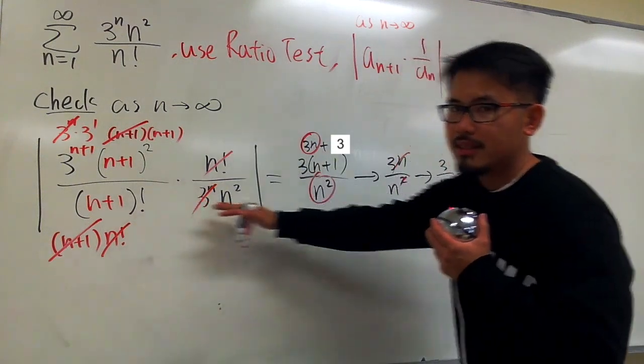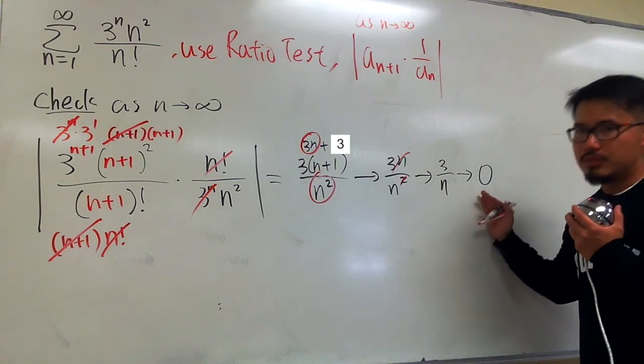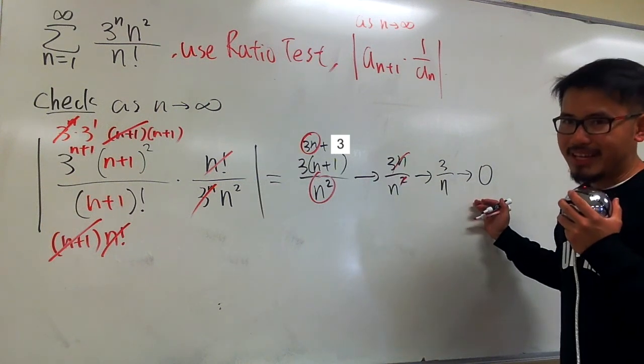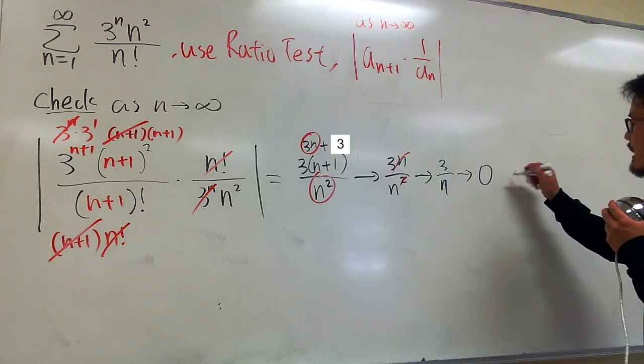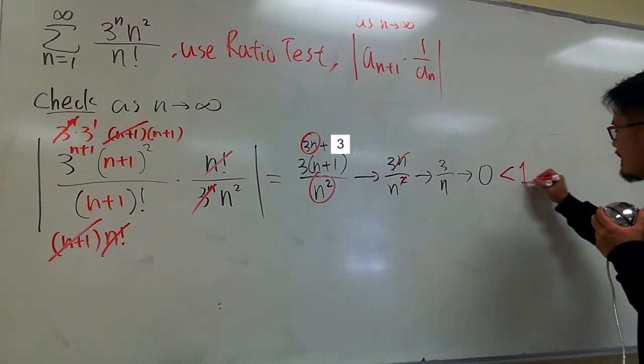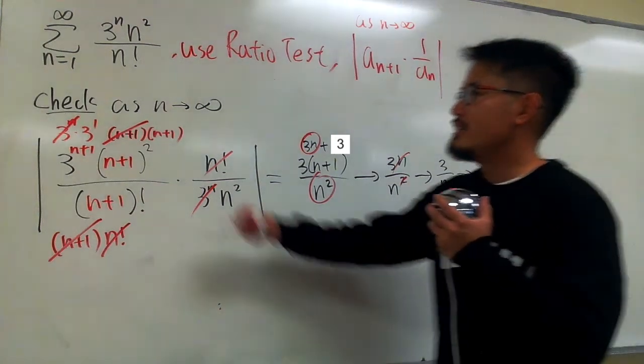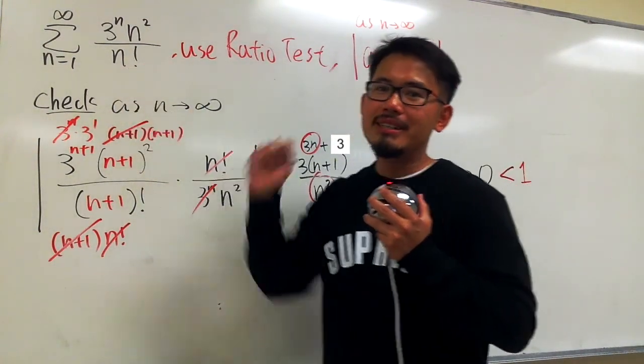When we have the ratio test and this is the limit, we have 0. Can we draw any conclusion with the ratio test? Yes, we can. And this is less than 1. What does that mean? That means the original series converges.